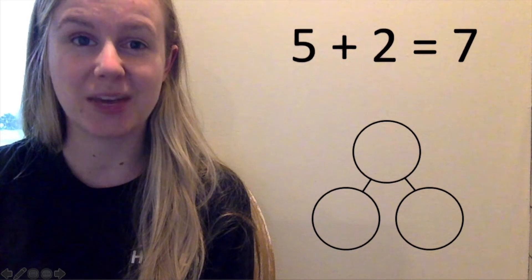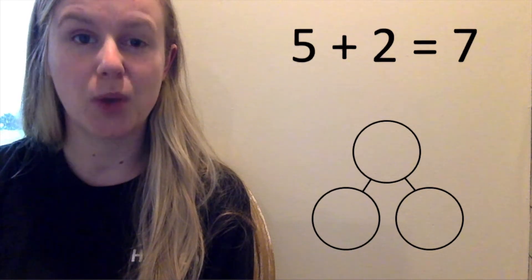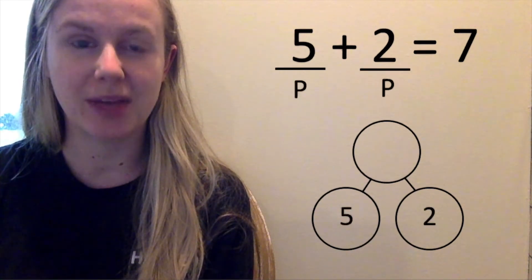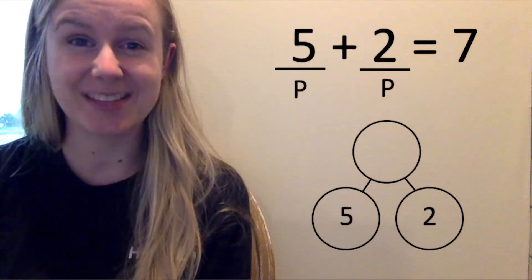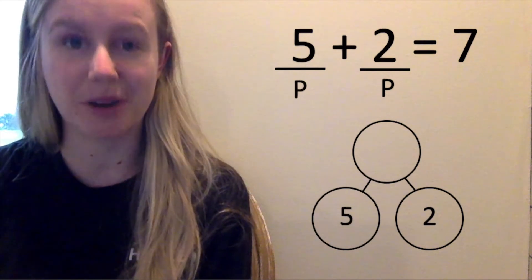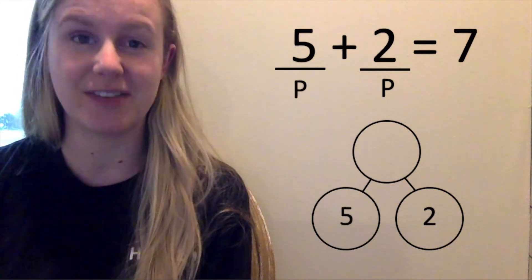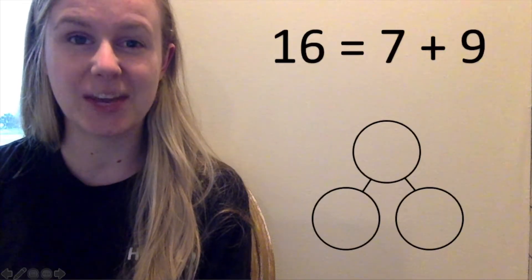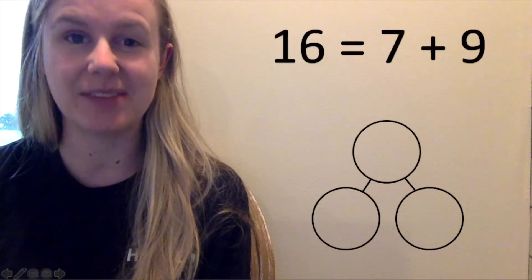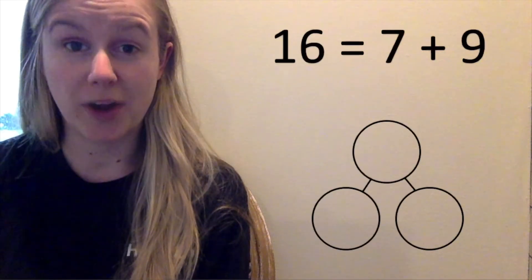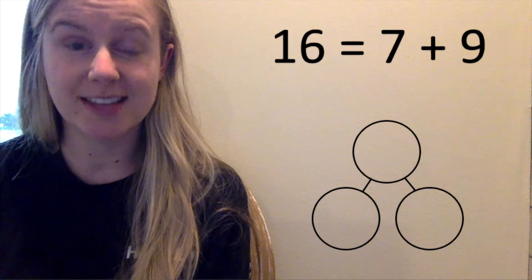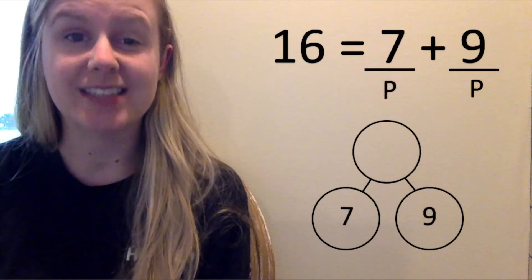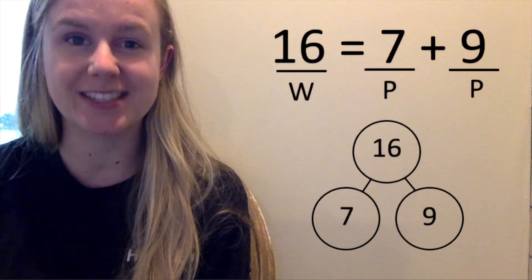What are the parts? Three and one. How do we know? Because Gus the Plus puts parts together. So that means four is the whole. Five plus two equals seven. What are the parts? Five and two. How do we know? Because Gus the Plus puts parts together. So seven is the whole.